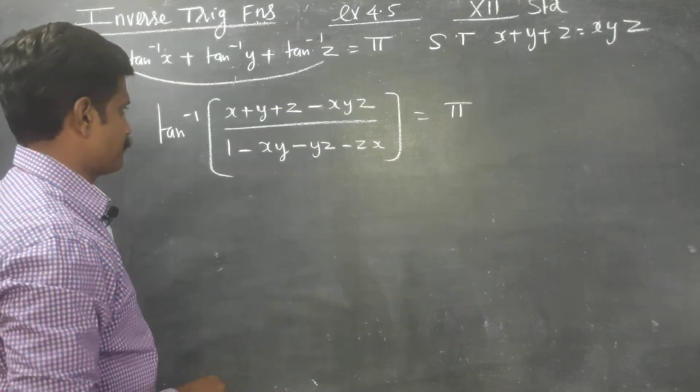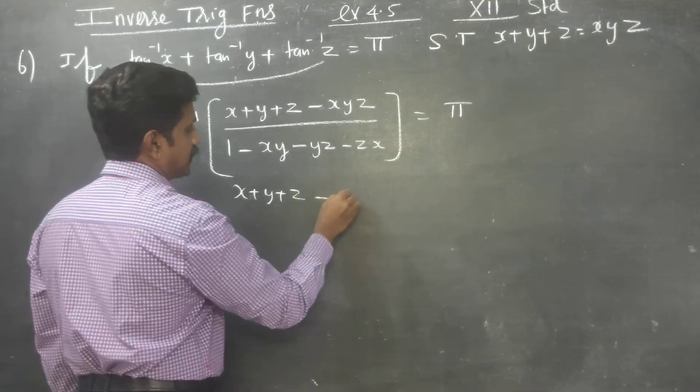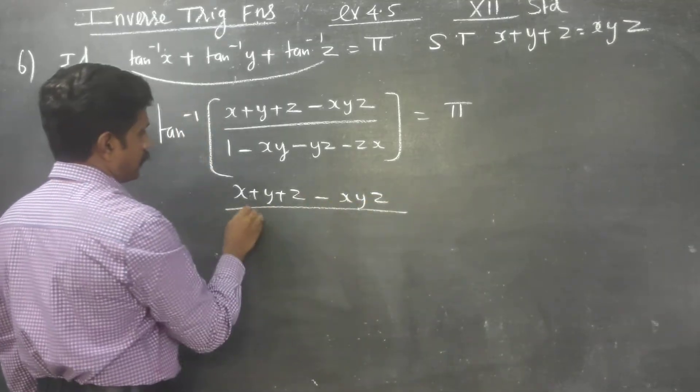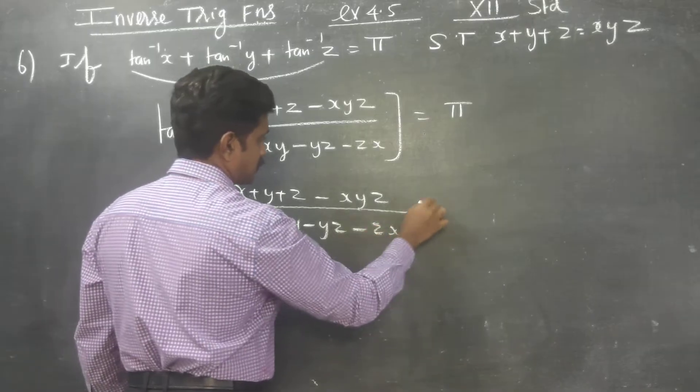Tan inverse of x plus y plus z minus xyz divided by 1 minus xy minus yz minus zx is equal to tan pi.